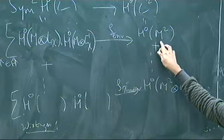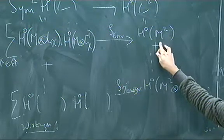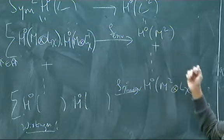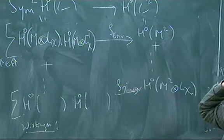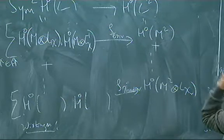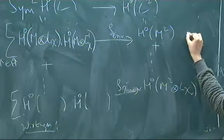You are looking at this H^0 of M square, the linear system of M square, which is, M is principally polarized. So that means suppose it has a theta divisor, the unique divisor, that is usually called as a theta divisor. So then this is the 2 theta linear system.